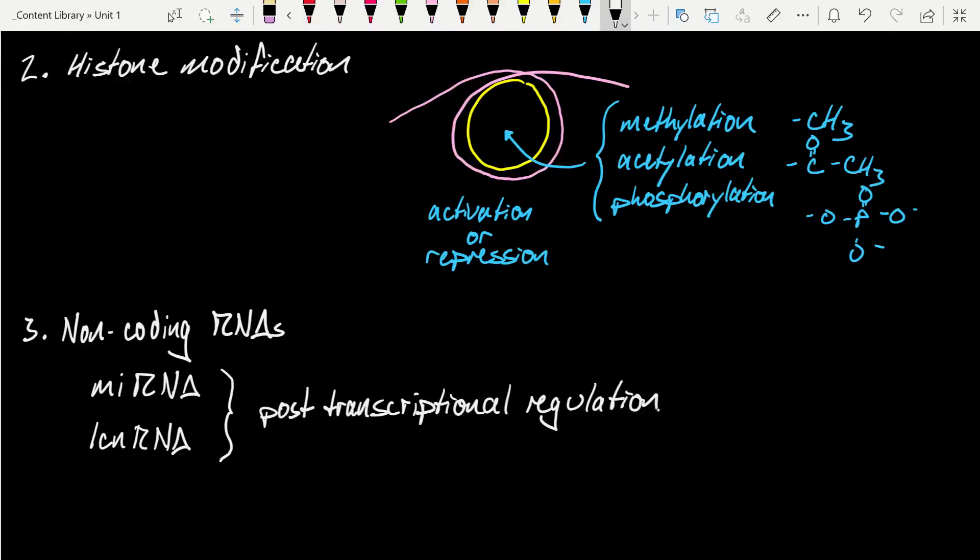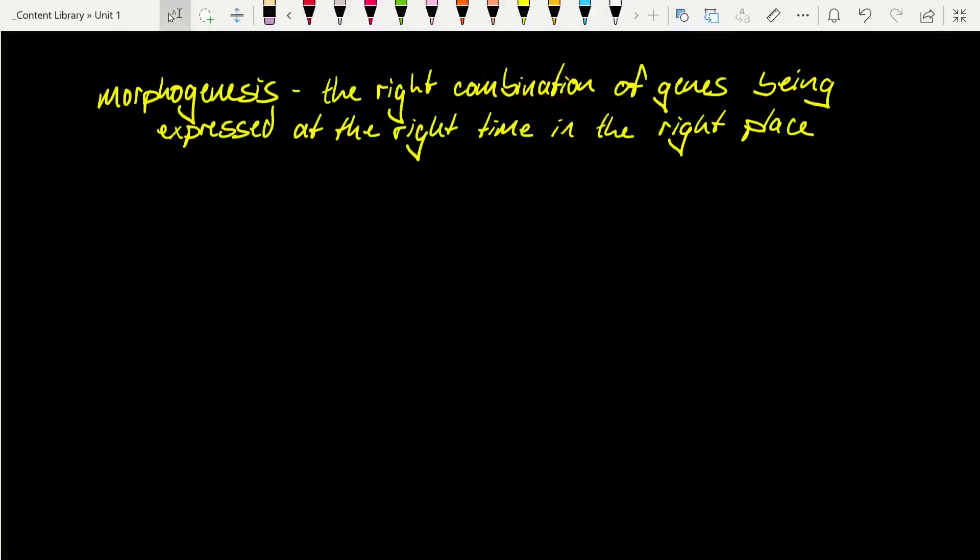So as we combine this idea of genetics and the regulation of those genes through epigenetics, we can start to understand that morphogenesis simply comes down to the right combination of genes being expressed at the right time in the right place. Of course, this process turns out to be really complicated. But one key principle I want to introduce you to is the concept of gradients.